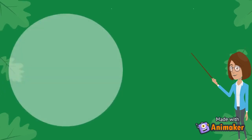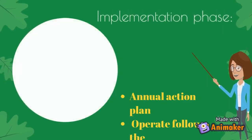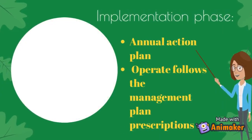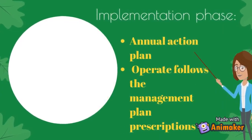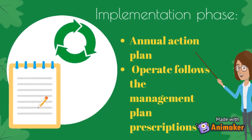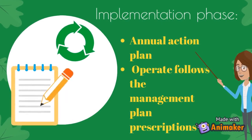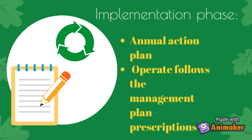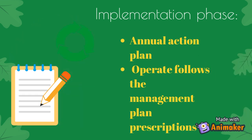The last stage is the implementation phase. This is where the annual action plan is prepared annually according to the budgetary resources. At this phase, the association and the participants operate the plan activities according to the management plan prescriptions.